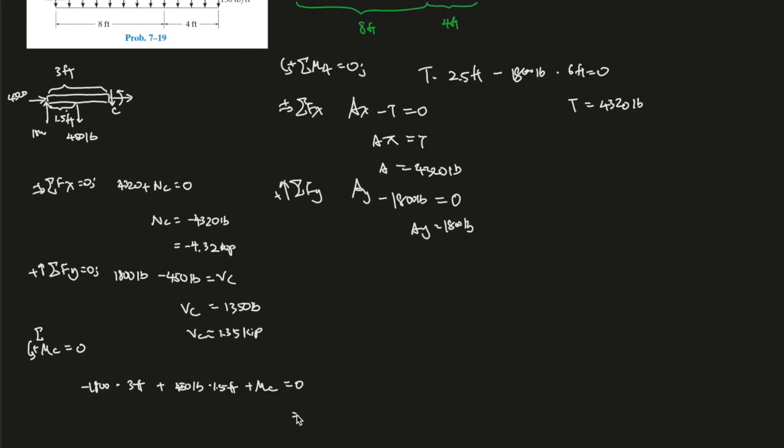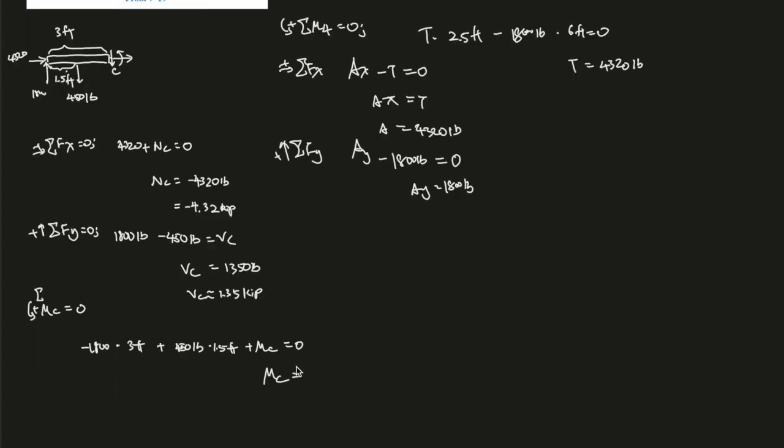And plug everything into a calculator, I'm going to do that real quick, 1,800 times 3 feet, minus 450. So Mc should be, because you plug this into the other side, and minus this, that's what I did, I said 1,800 minus the 450. So Mc should give you 4,725.